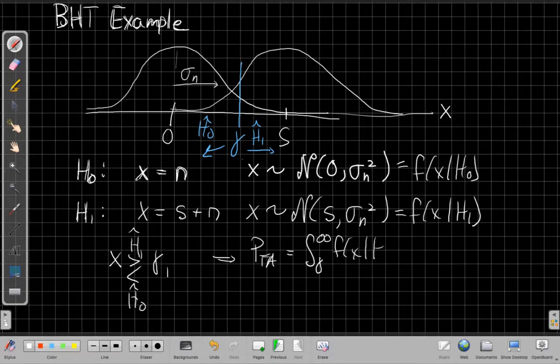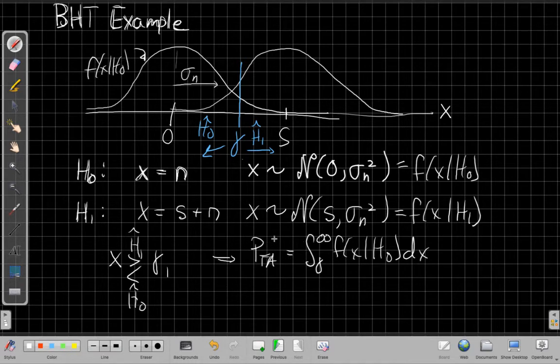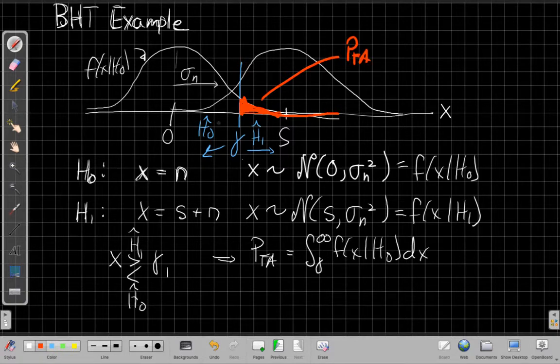Of the probability of f of x given H0 dx, right? Which in this graphical terms, we say, well, this piece here, this is my f of x given H0. So what this is saying is the probability of false alarm is the area under this curve above gamma. So that would be, let me color it in red here. It would be this region here, and all the way out under some very thin area. This area would be the probability of the false alarm.